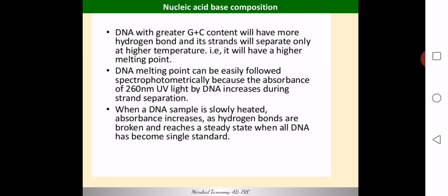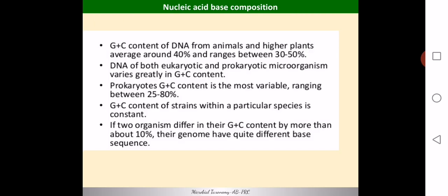When DNA is in single-stranded form the absorption increases — this is called the hyperchromic shift. As a DNA sample is slowly heated, the absorbance is recorded, showing a gradual increase as hydrogen bonds are broken. From this curve you can find the melting point — the temperature at which half of the DNA molecules have undergone melting — and from the melting point you can calculate the G+C content.